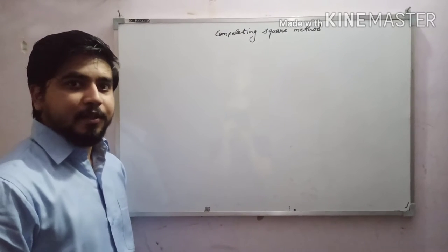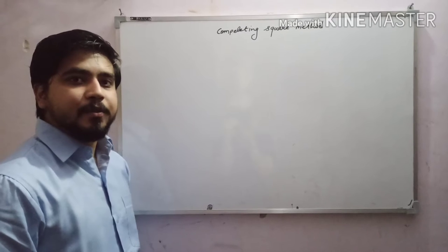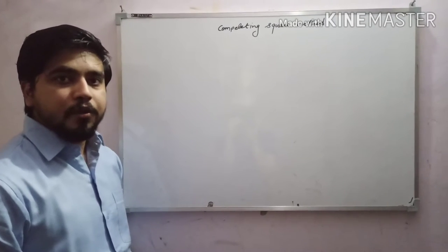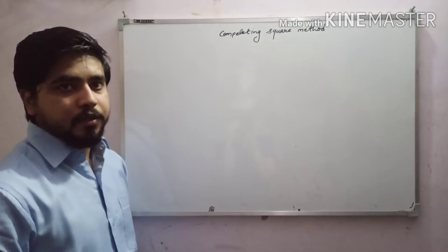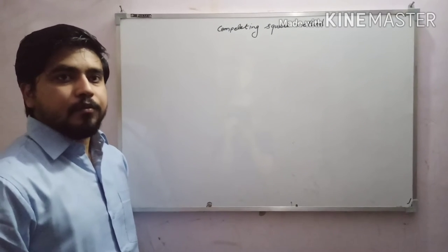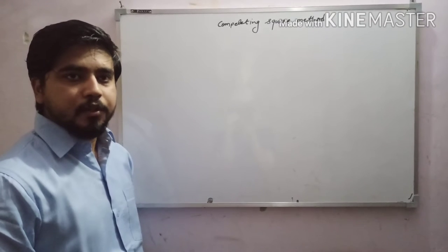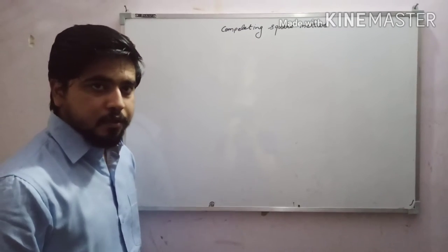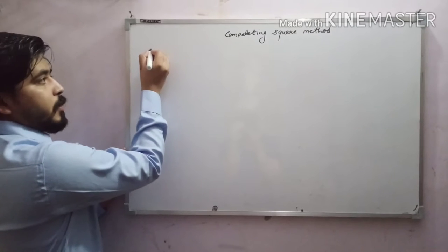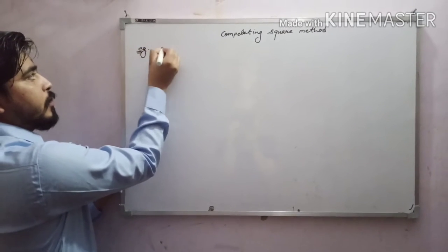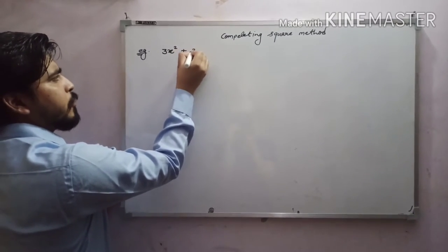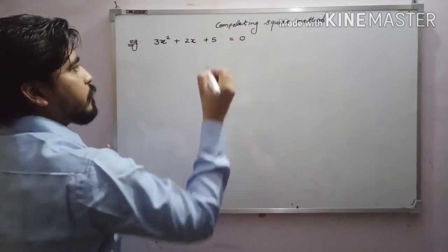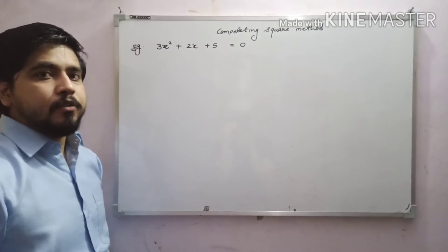Hello students, I am Ankit Gupta. Today I am here to present a topic: the completing the square method. This method is used to solve the zeros of a quadratic equation. I am taking one example for solving the quadratic equation, by which we will find two zeros of that equation. Please see — first we will take an example: 3x² + 2x + 5 = 0. This is a quadratic equation on which we will apply this method.